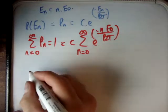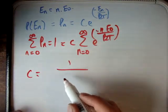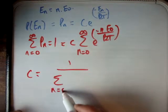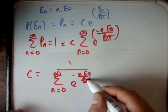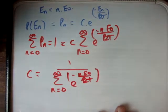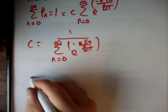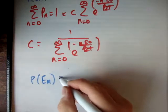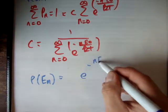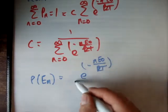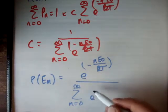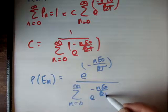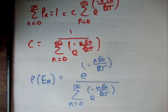If you manipulate that, we find that C is equal to 1 over the sum from n equals 0 to infinity of e to the negative n·E₀ over kT. That's the constant. So as a result, the probability of being at a particular energy level E_n is equal to e to the negative n·E₀ over kT divided by the sum from n equals 0 to infinity of e to the negative n·E₀ over kT.